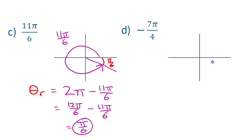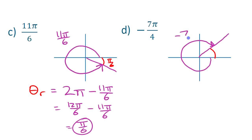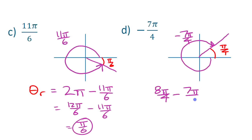For negative 7π/4, you're going backwards since it's a negative angle, landing in quadrant four. The reference angle is that small angle. We know one full turn is 2π or 8π/4. We take 8π/4 and subtract 7π/4 — that's the part not there — and the leftover part is 1π/4 as the reference angle.